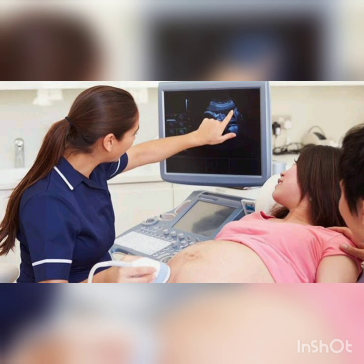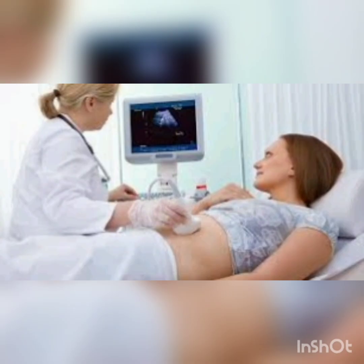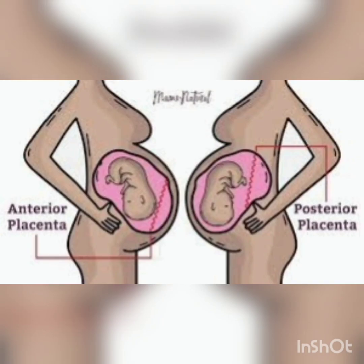If you have grade 1 or grade 2, don't worry about it — it is completely normal. If you have any issues with your uterus, grade 3 is possible. So grade 2 and grade 3 are possible in that case. If you have uterus issues, you may be scared, but the scan report will be checked.